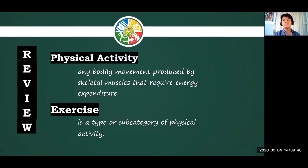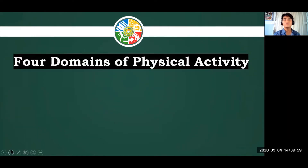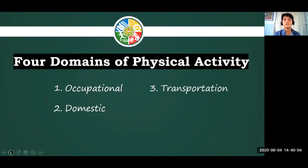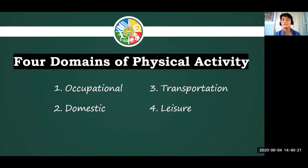There are different types of physical activity, and there are also domains. Here are the four domains of physical activity: occupational, domestic, transportation, and leisure. These four domains are categories of physical activities because we perform lots of movements every day. They can be categorized depending on their purpose — so these four domains are also four reasons why we perform physical activity.